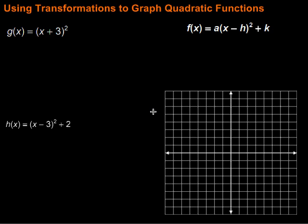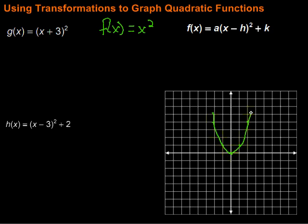In this video we're going to take a look at using transformations to graph quadratic functions. Remember that the parent quadratic function is f of x equals x squared. That's a parabola with the vertex at (0, 0). The next points would be (1, 1) or (-1, 1), then (2, 4) and so on to get our parabola.